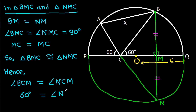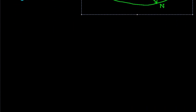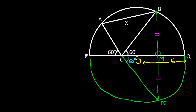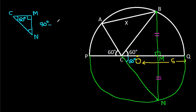Angle BCM equals angle NCM, so angle NCM is equal to 60 degrees. Now, in triangle CMN, this angle is 90 degrees and this angle is 60 degrees, so this angle will be 90 minus 60, which is 30 degrees.